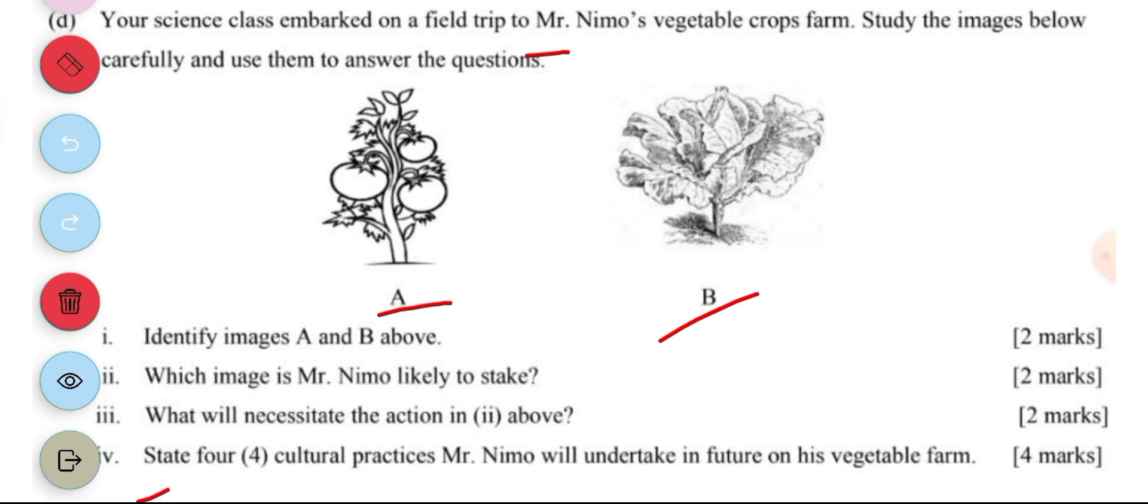Now A is tomato plant, and then B is lettuce plant.